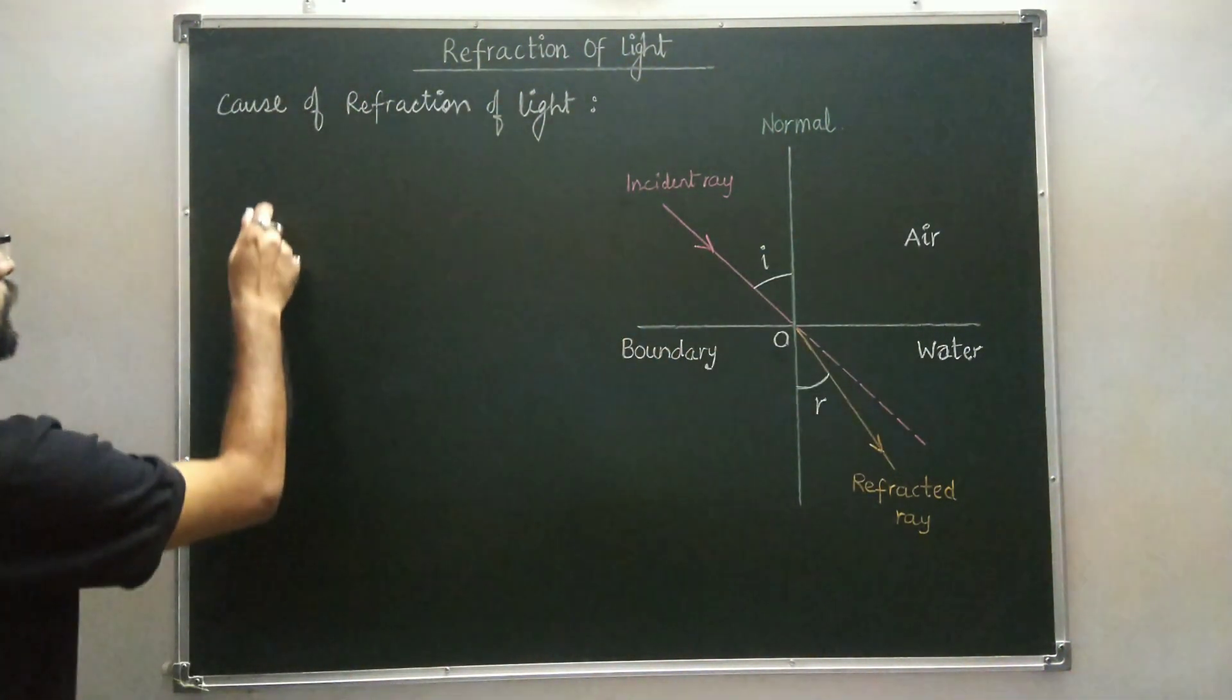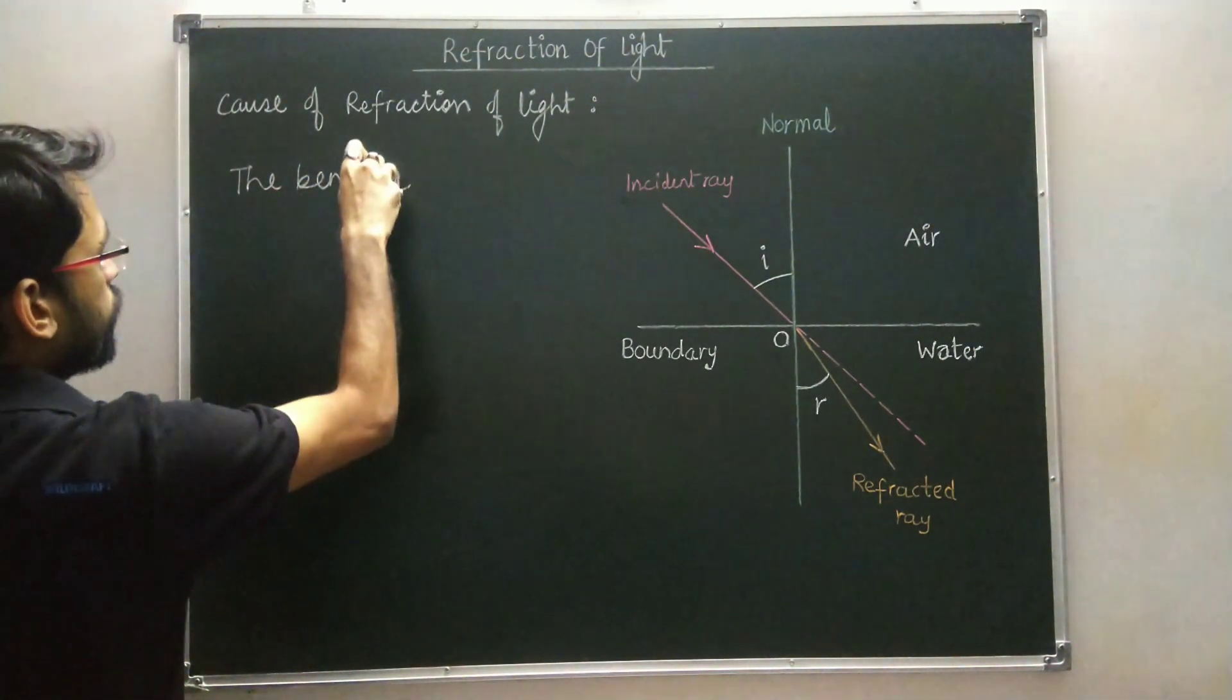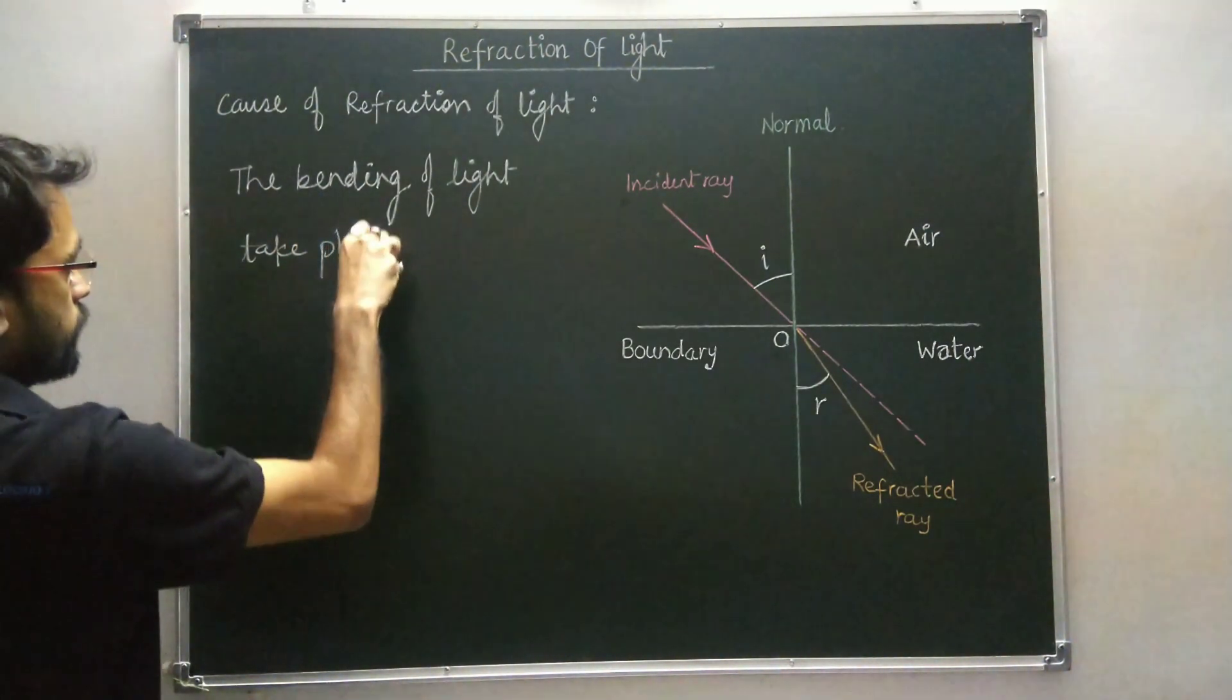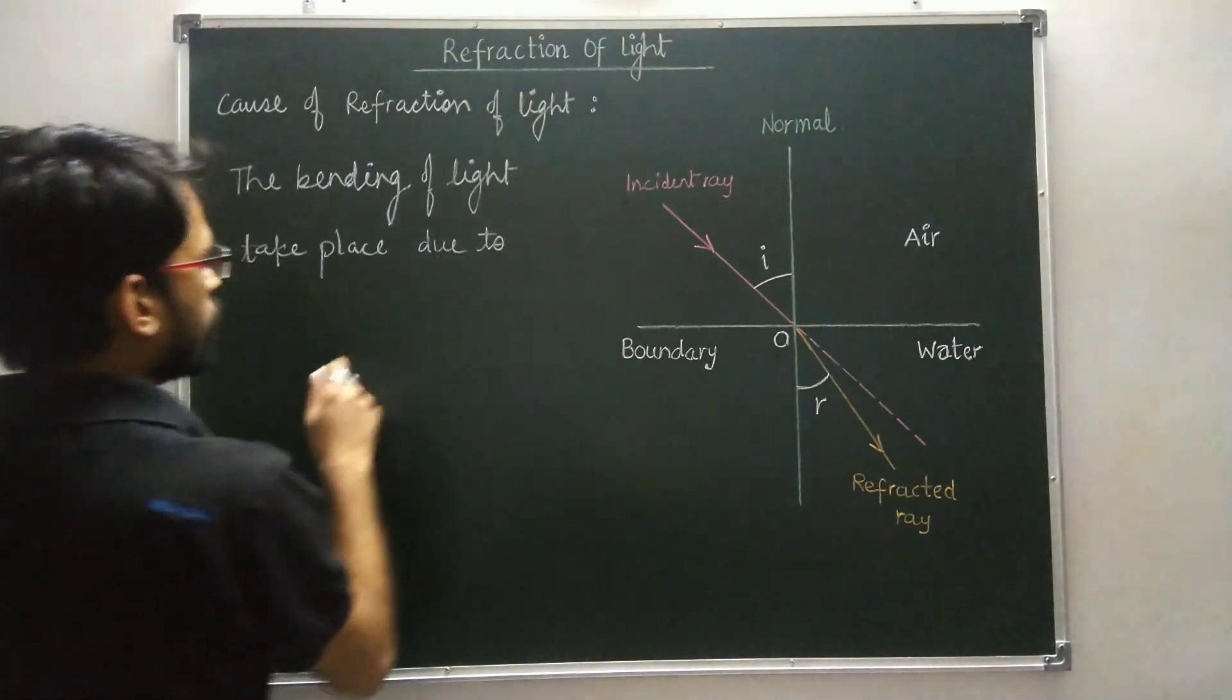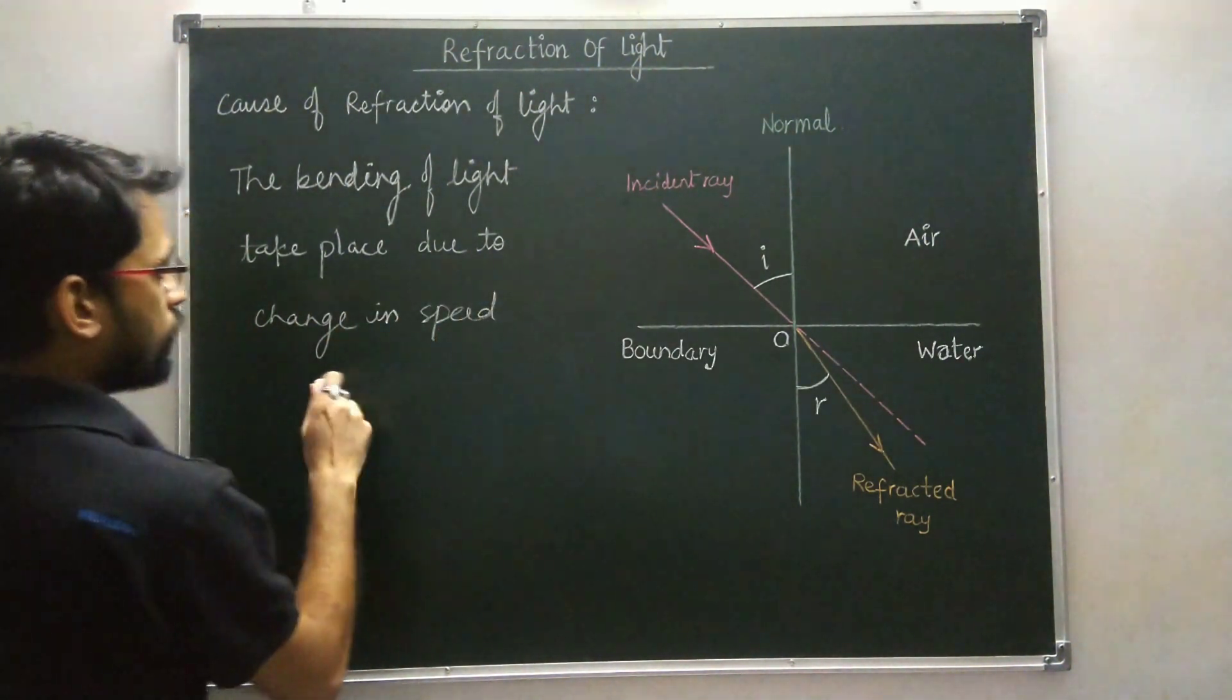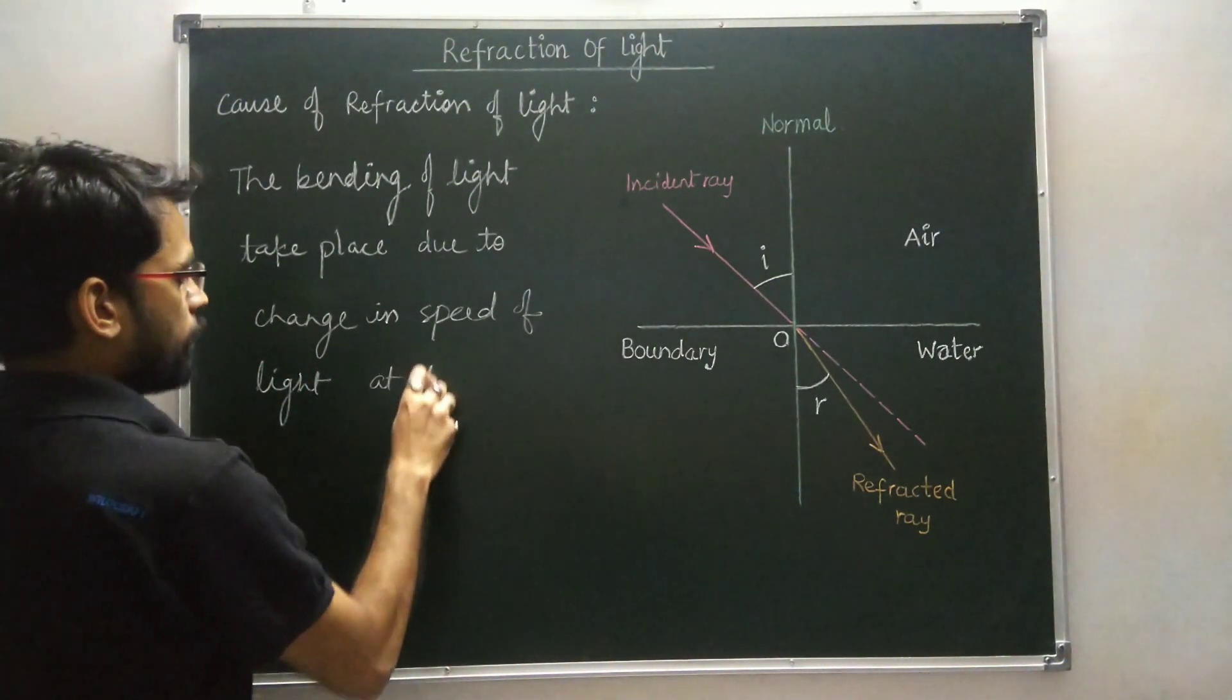So we can write: The bending of light takes place due to change in speed of light at the boundary.